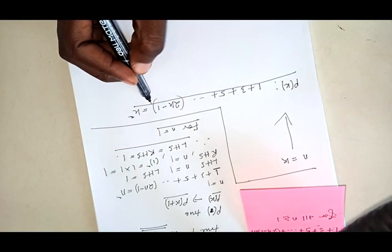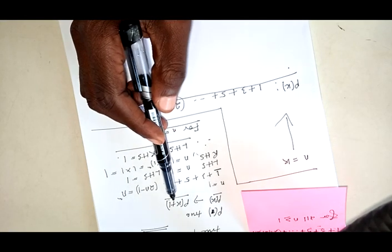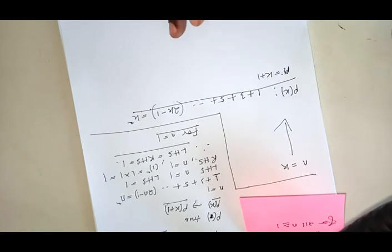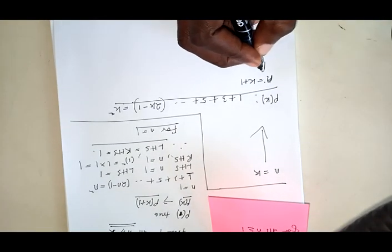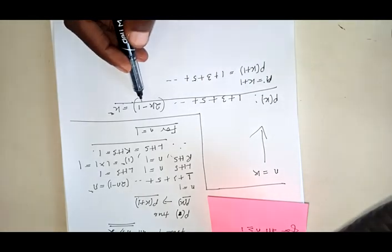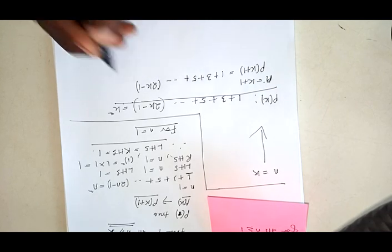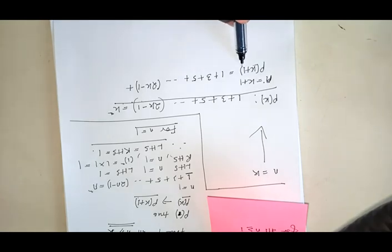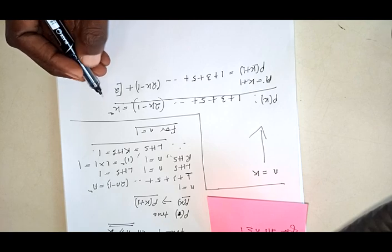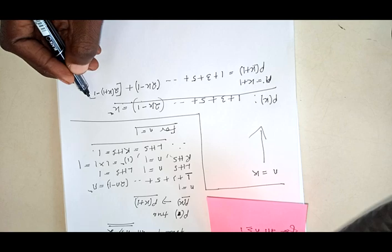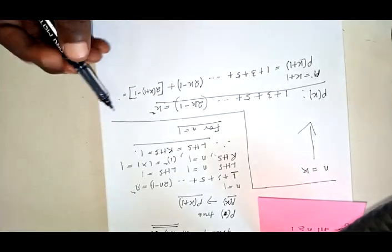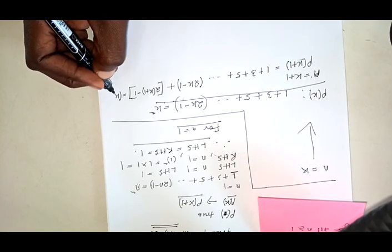If P(k) is true, then P(k+1) should also be true. So we propose that n is equal to k plus 1. Then P(k+1) is equal to 1 plus 3 plus 5 plus ... plus (2k − 1), and then plus the new term, where n is replaced by k plus 1, giving us 2(k+1) minus 1. This should be equal to (k+1) squared.